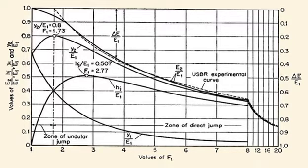The maximum relative height, H sub J over E sub 1, is 0.507 at F1 equal 2.77.